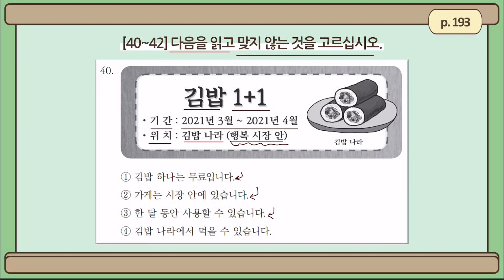Number 3: 한 달 동안 사용할 수 있습니다 — you can use this coupon for one month. But actually, it says the duration of this coupon is from March to April, so it seems like you can use it for two months — 두 달 동안 사용할 수 있습니다. Number 4: 김밥 나라에서 먹을 수 있습니다 — you can eat at 김밥 나라. Yes, that's correct. So the answer is number 3.